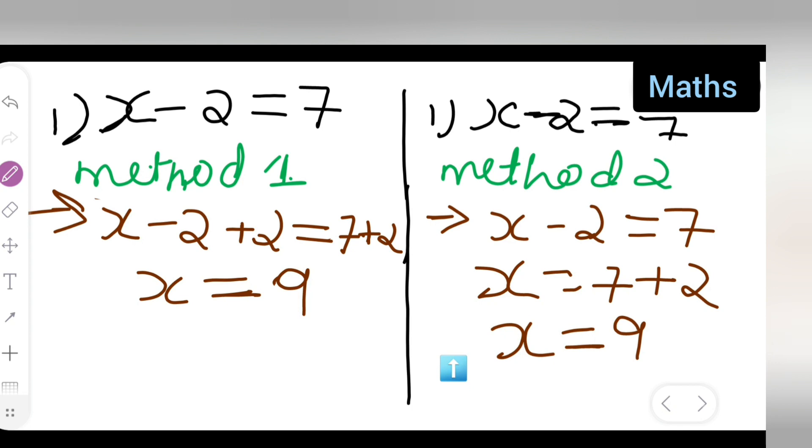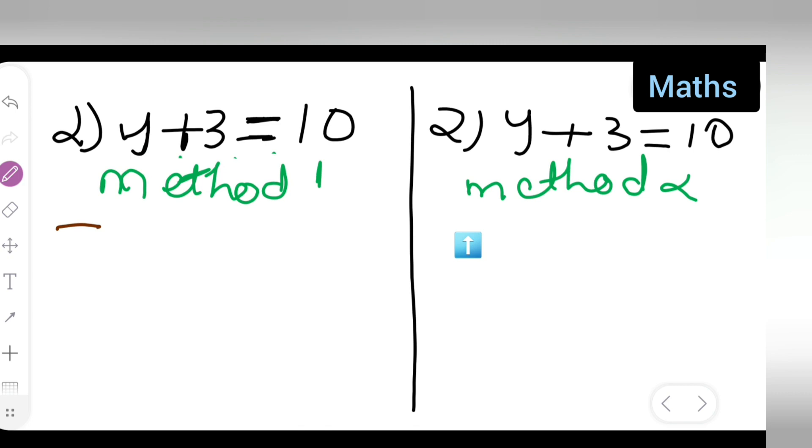So, just correct that. Next let us see here. Same way what we are going to do is. We are going to add subtract minus 3 on both the side. So, here. So, that this will be 0. Right. Minus 3 is equal to. Here it will be 10 minus 3. So, what you will get is. Y is equal to 10 minus 3 is going to give you 7.